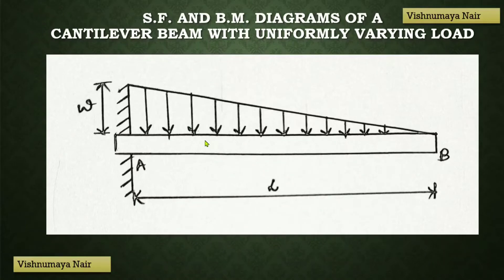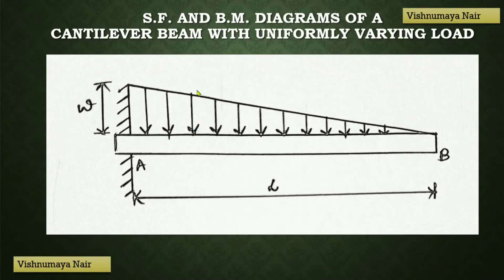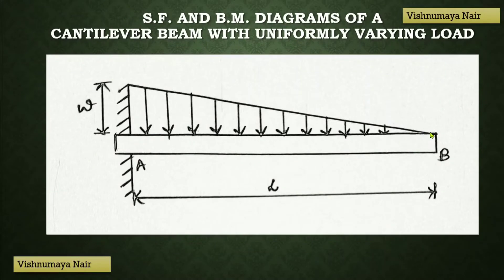For solving numerical problems, we have to convert this uniformly varying load into a point load whose value will be equal to the area of this triangle, and it will be acting at the centre of gravity of the triangle. The centre of gravity of the triangle will be at a distance of L/3 from the left end, or 2L/3 from the right end.